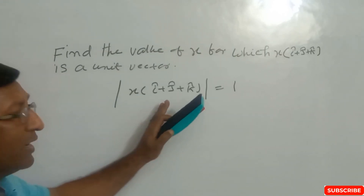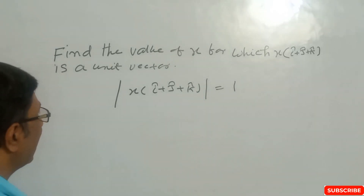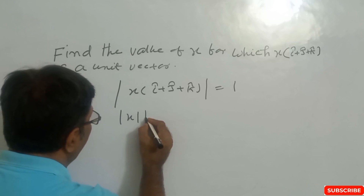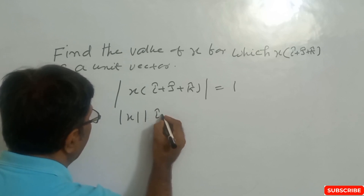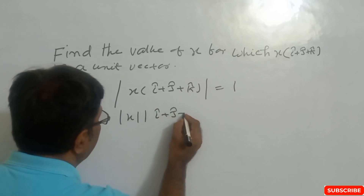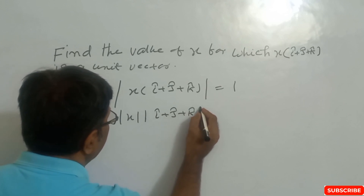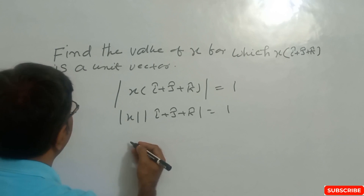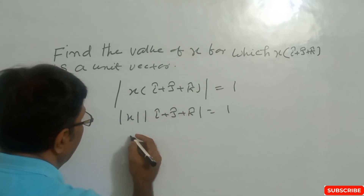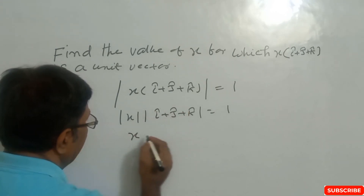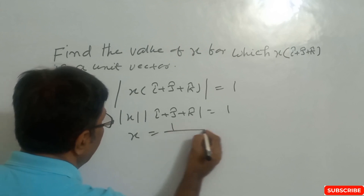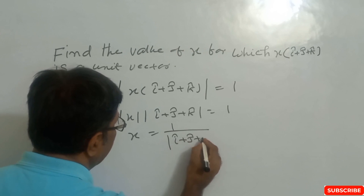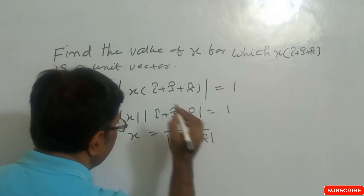So now we have to find the magnitude of this. We can write this as the magnitude of x times the magnitude of (î + ĵ + k̂) equals 1. So x equals 1 divided by the magnitude of (î + ĵ + k̂).